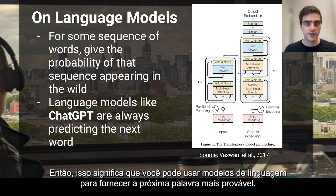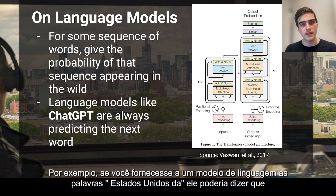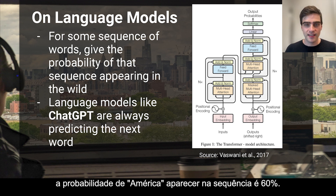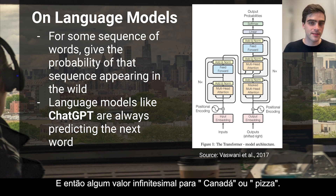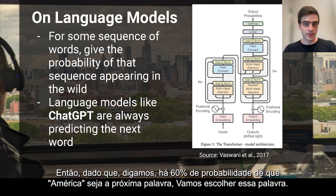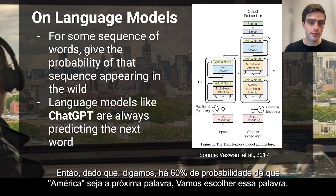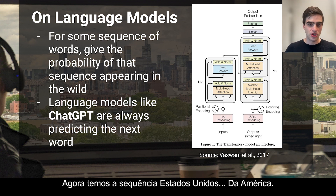Now, this means that you can use language models to give you the next most likely word. For example, if you were to give a language model the words 'United States of,' it might say that it's 60% probable that 'America' would follow. And then perhaps it might say that it's 15% likely for 'Mexico' to follow. And then some infinitesimal value for 'Canada' or 'pizza.' So, given that it's 60% likely that 'America' would follow, let's pick that word. Now we have the string 'United States of America.'